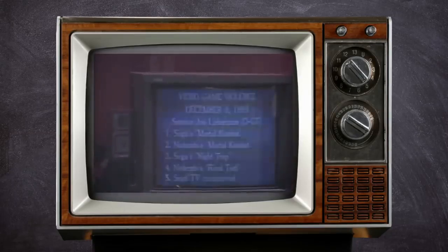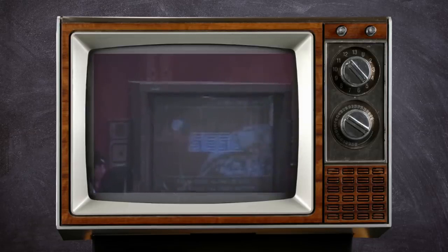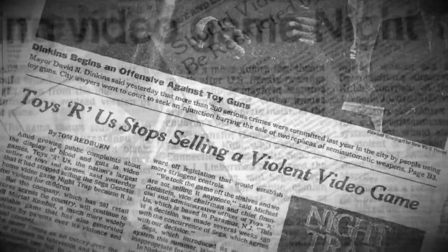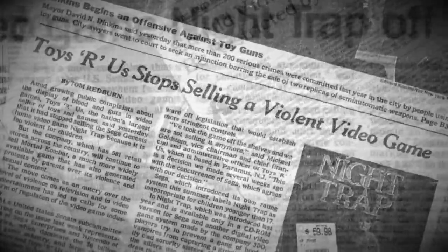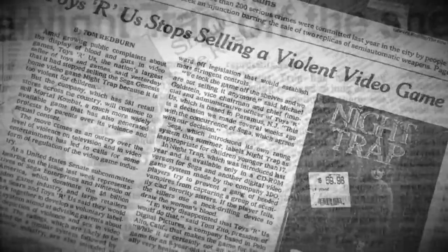As the committee meeting goes on a number of industry and educational experts speak. This hearing will become known as the 1993 congressional hearings on video games and it was the culmination of a moral panic, the thinking being that violence shown in media will be emulated by children. The ultimate result of the hearings is a more unified age rating system for home media.